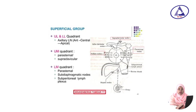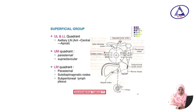Upper lateral and lower lateral quadrants drain into the axillary lymph node — anterior axillary, then central, then apical. The upper medial quadrant drains first to the parasternal and supraclavicular lymph nodes. The lower medial quadrant drains to the parasternal, subdiaphragmatic, and subperitoneal lymph nodes.